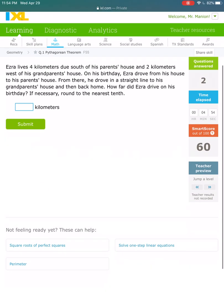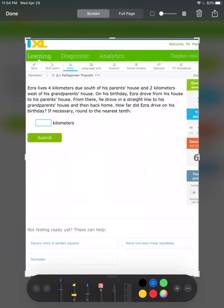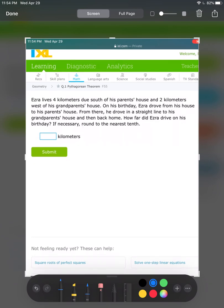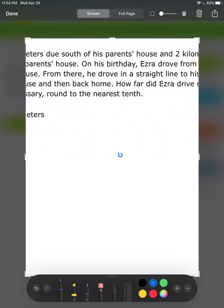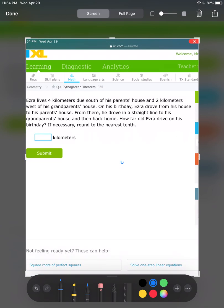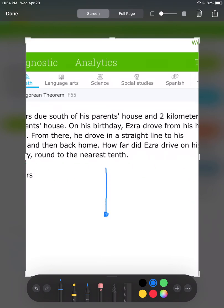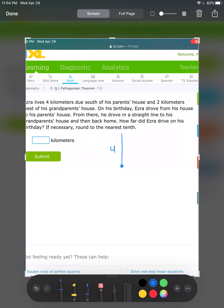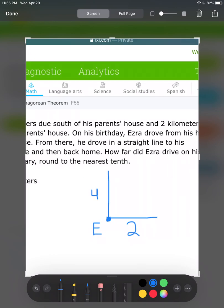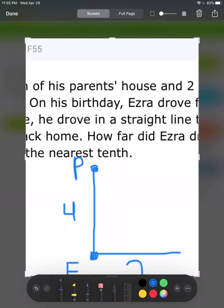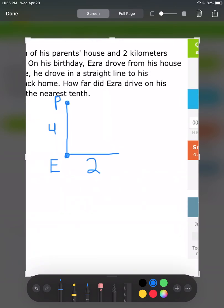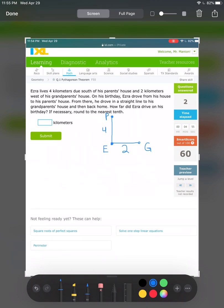Now we're going into word problems. Ezra lives 4 kilometers due south of his parents' house and 2 kilometers west of his grandparents' house. Let me draw this. This is where Ezra is. He lives 4 kilometers south of his parents, so if I go north, that's 4. And 2 kilometers west, so if I go east from his house, that's 2 kilometers.